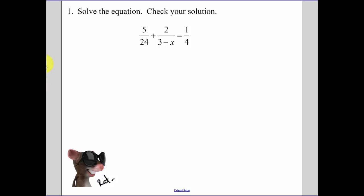Solving the equation, check your solution. We need to figure out what the least common denominator is. I know it's going to have that 3 minus x in it because that's in this denominator. What's the least common multiple between 24 and 4? That's going to be 24.